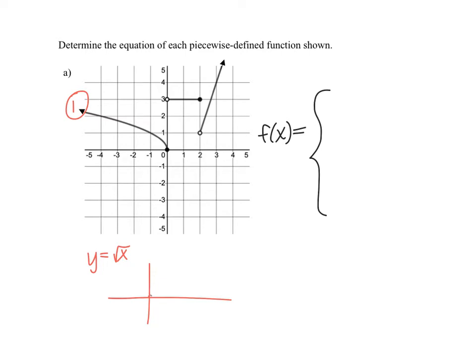For the square root of x, we know it passes through (0, 0), (1, 1), and then inputting 4 gives us 2, since the square root of 4 is 2. Comparing this with our graph, we see a reflection across the y-axis. So the graph presented to us is the same as the square root of x, but reflected across the y-axis. To reflect across the y-axis, we make the x values negative, giving us y equals the square root of negative x.